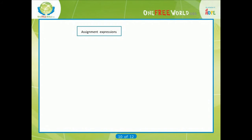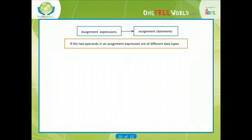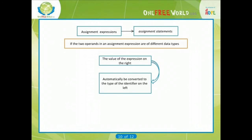Assignment expressions are often referred to as assignment statements, since they are usually written as complete statements. However, assignment expressions can also be written as expressions that are included within other statements. If the two operands in an assignment expression are of different data types, then the value of the expression on the right, that is the right hand operand, will automatically be converted to the type of the identifier on the left. The entire assignment expression will then be of this same data type.